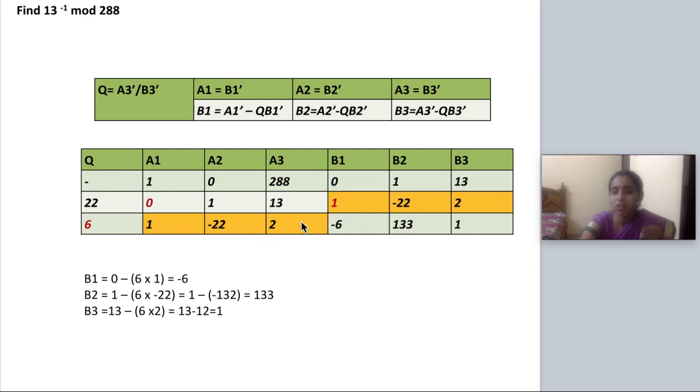Then B1 value is equal to previous A1 minus Q into previous B1. So 0 minus 6 into 1, that is minus 6. Then B2 is 1 minus 6 into minus 22. So 1 minus minus 132 that is 1 plus 132 that is 133.